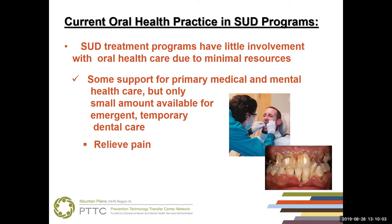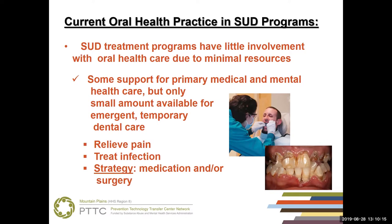If somebody has acute issues such as pain, we can spend some of our budget to help relieve that pain. Or if there are infections, we can take care of the infections — prescribe something for the pain or infection, or maybe surgery such as extractions. But that's about it, just the emergency issues. There's no comprehensive strategy out there, and the problem on the dental side relative to substance use disorder hasn't been well studied. There are anecdotal stories, and everybody recognizes that it's an issue, but the reports are somewhat variable because they haven't been evaluated in a scientific approach.